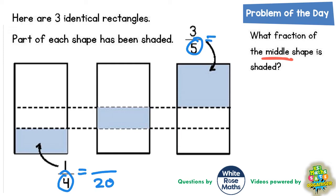Let's make them into equivalent fractions out of twenty. To get from four to twenty, we make it five times bigger — four times five is twenty. Whatever we do to the bottom number we do to the top number as well, so we times the one by five: one times five is five. So a quarter as an equivalent fraction is five twentieths.